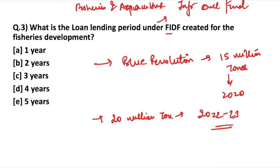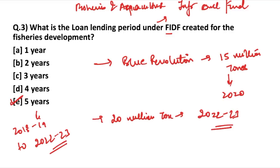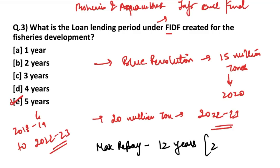The loan lending period under FIDF is 5 years. The loan disbursement duration is from 2018-19 to 2022-23. The general loan lending period is 5 years. When talking about the maximum repayment period, it is 12 years, which is inclusive of a moratorium of 2 years. So the 2 moratorium years are included within those 12 years.